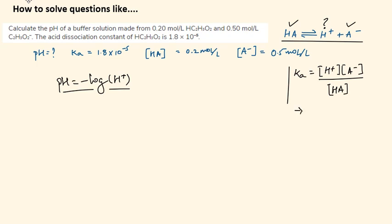So what does it give? If I have to isolate this H plus ion concentration, I have to multiply Ka with HA concentration and divide it by A minus concentration. Just multiplying both sides by HA and multiplying both sides by 1 over A minus.